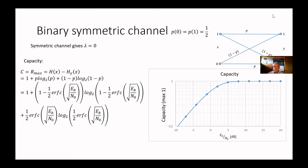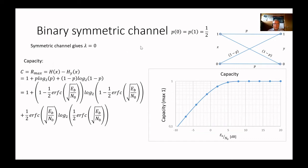We can also look at the capacity of the binary symmetric channel. With p0 = p1 = one half the symmetric channel gives lambda equal to zero, and we have the capacity C = R_max = H(X) minus H(Y|X), which gives the expression: 1 + p*log2(p) + (1-p)*log2(1-p). We substitute in the complementary error function to get an expression in Eb/N0. Plotting capacity as a function of Eb/N0, you see that capacity is one at higher values, but when closing in on about 8 dB it begins to drop off and then steadily decreases.